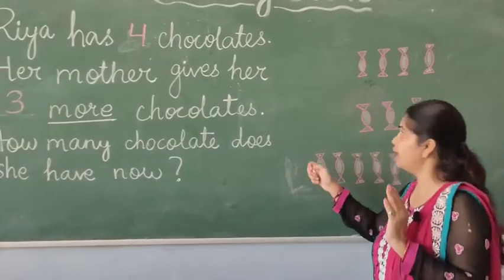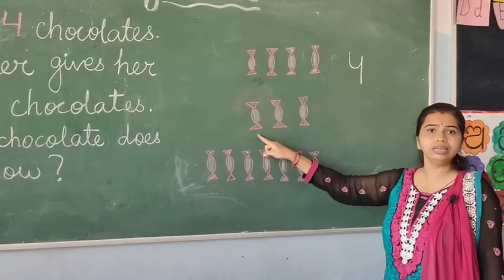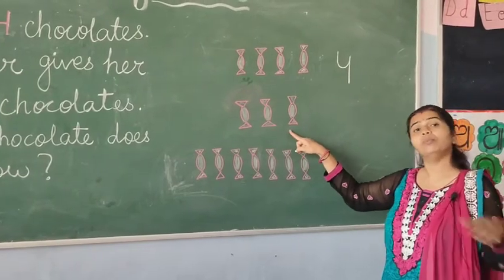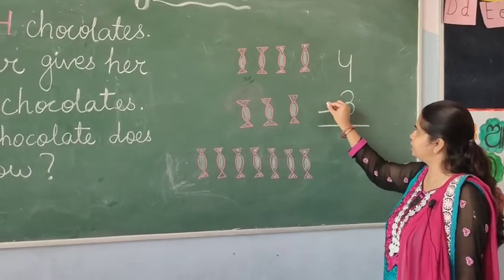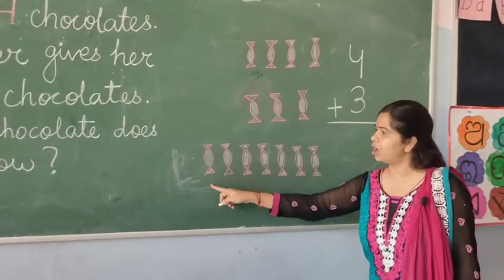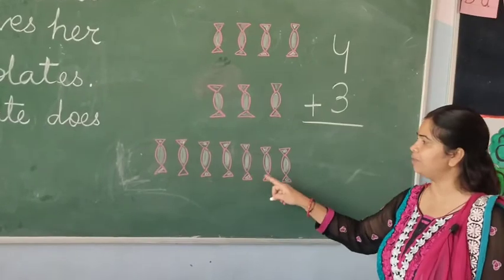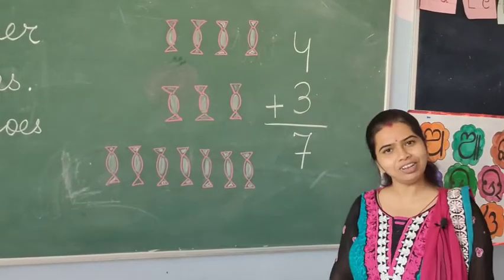So Ria has four chocolates. Her mother gives her three more chocolates. More means addition. So how many chocolates does Ria have? One, two, three, four, five, six, seven. Ria has seven chocolates.